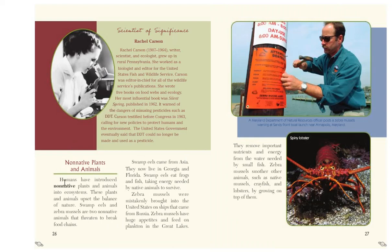Non-native plants and animals. Humans have introduced non-native plants and animals into ecosystems, upsetting the balance of nature. Swamp eels and zebra mussels are two non-native animals that threaten to break food chains. Swamp eels came from Asia and now live in Georgia and Florida, eating frogs and fish and taking energy needed by native animals. Zebra mussels were mistakenly brought into the United States on ships from Russia. They have huge appetites, feed on plankton in the Great Lakes, remove important nutrients from water needed by small fish, and smother native animals like mussels, crayfish, and lobsters by growing on top of them.